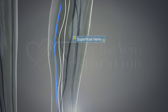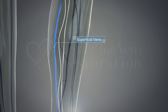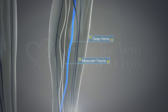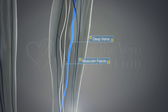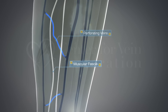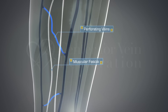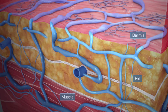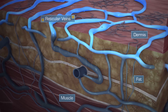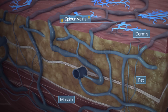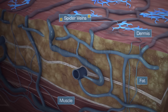These veins can be divided into the superficial veins, the deep veins, and the perforating veins. The superficial veins lie superficial to the muscular fascia, the deep veins lie deep to the muscular fascia, and the perforating veins perforate through the muscular fascia. In addition, the reticular veins lie in the subdermal layer, and the spider veins lie in the dermal layer.